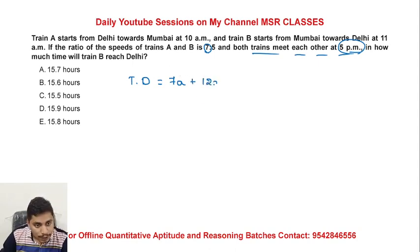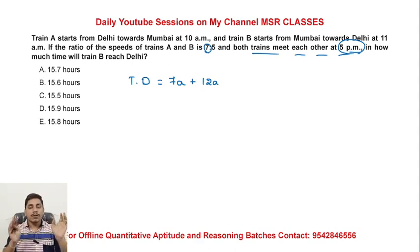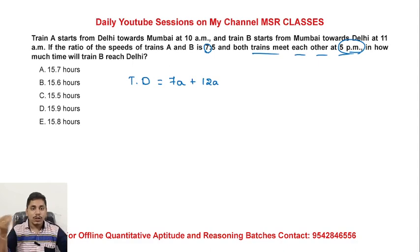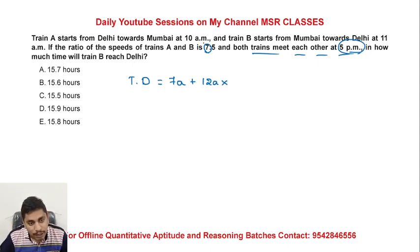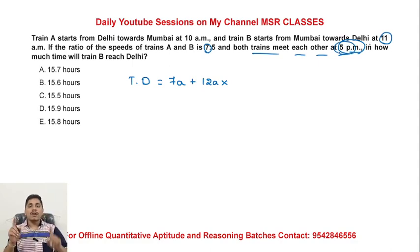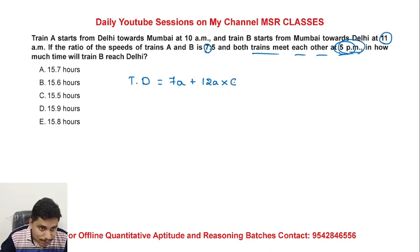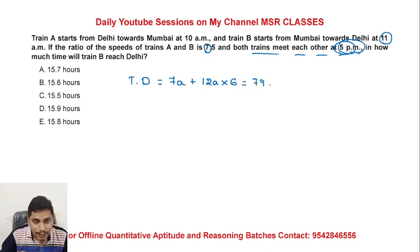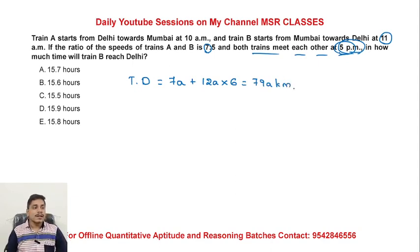12A is the relative speed since they travel in opposite directions towards each other. 1 hour travel gap: from 11am to 5pm is 6 hours total. So total distance is 7×6 = 72 plus 7 = 79A kilometers total distance.